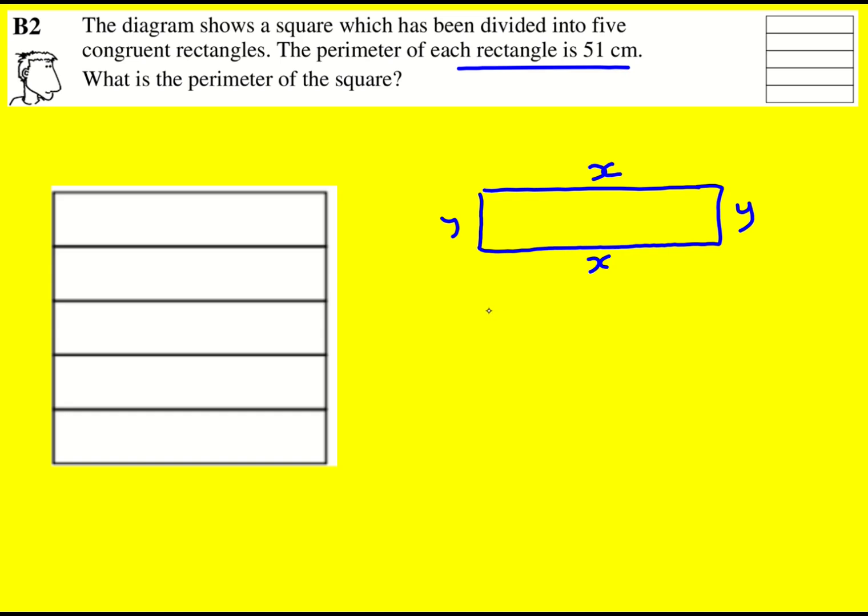Therefore, because the perimeter is 51, it must be that 2x plus 2y equals 51.